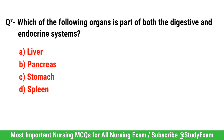Question No. 7. Which of the following organs is part of both the digestive and endocrine systems? Correct option is B. Pancreas.